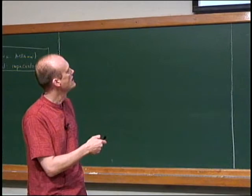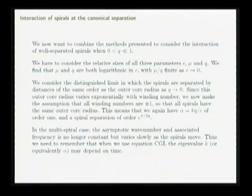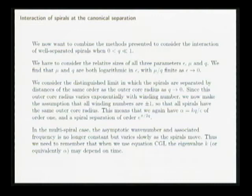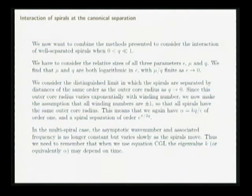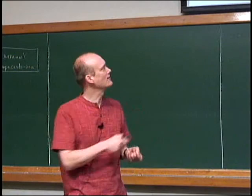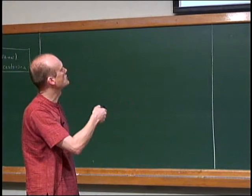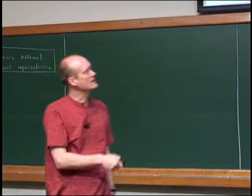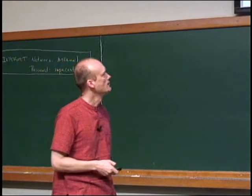The first thing to try is the distinguished limit in which the separation is the same as this outer core radius, so the cores don't overlap but the interesting behavior in the phases happens on the same scale as the separation of vortices. I'm going to choose epsilon to be this outer core radius. Then mu and q are both going to be logarithmic in epsilon — both like 1/log epsilon — so in the limit, mu/q is going to be finite as mu and q both tend to zero. I've now got three parameters: two logarithmically small in epsilon and then epsilon itself.